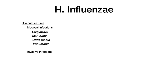Now let's talk about clinical features. There are really two types. First, there are mucosal surface infections — the IgA protease allows the bacteria to infect the epiglottis, meninges, ear, and upper respiratory system, causing sinusitis, pneumonia, otitis media, meningitis, and epiglottitis. After a mucosal infection, the infection can become invasive and spread to other areas of the body, though this is less common.